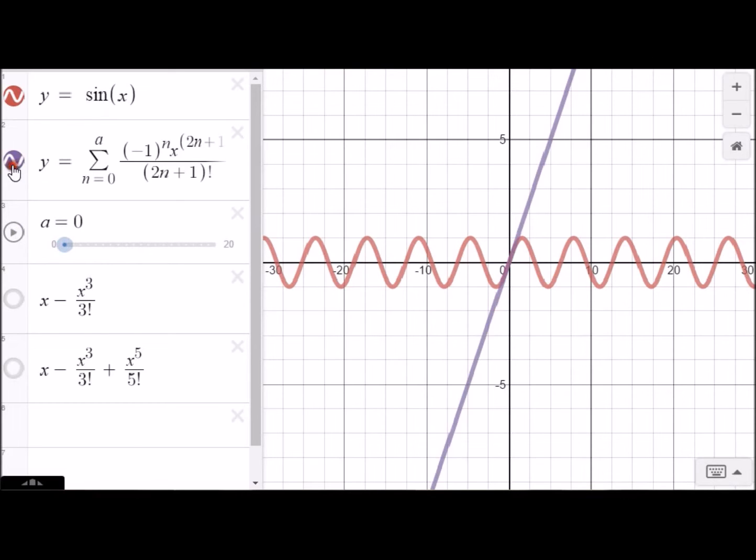So recall that we said the very first approximation, we said that you can approximate sine x just by using y equals x. So let's do that here. There's the graph of y equals x. So again, it kind of does approximate sine x. It approximates sine x just for a little bit right around zero.